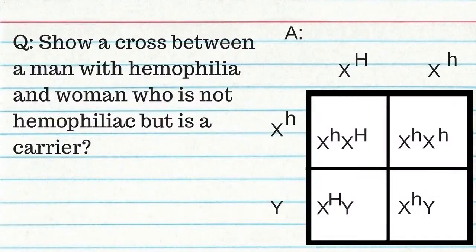Females have XX chromosomes. Males have XY chromosomes. Most sex-linked traits are on the X chromosome because it is bigger and has more genes than the Y. Most sex-linked crosses are recessive. In a cross between a man with hemophilia and a woman who is a carrier: the woman has X^H X^h (carrier) and the man has X^h Y (hemophiliac). Their daughters have a 50% chance of being hemophiliac and a 50% chance of being a carrier. Sons have a 50% chance of being hemophiliac and a 50% chance of not having the condition.